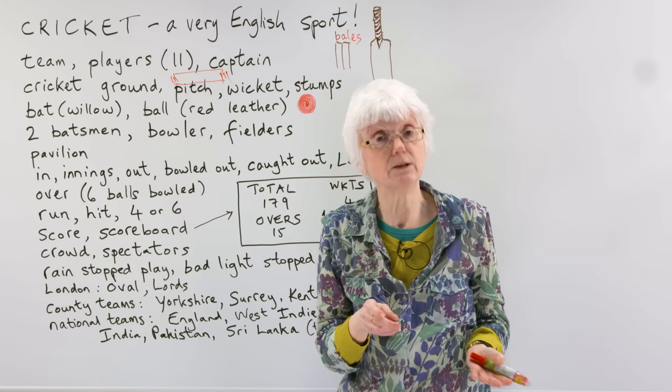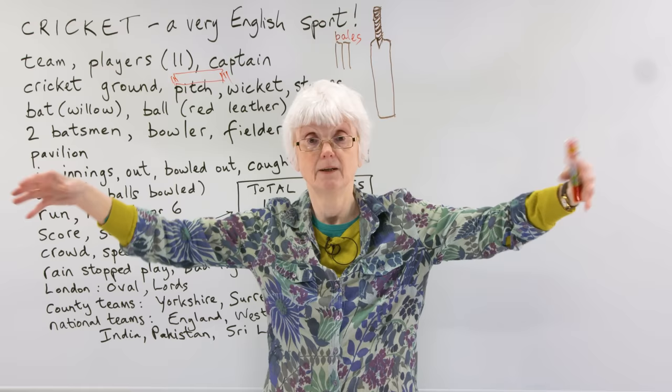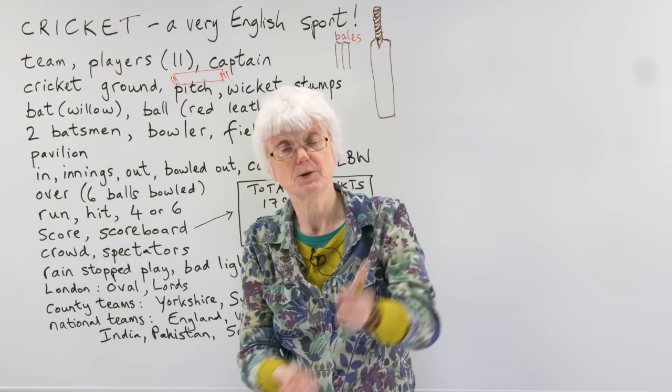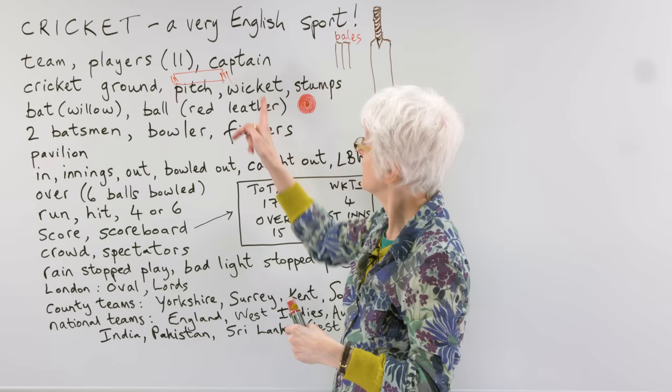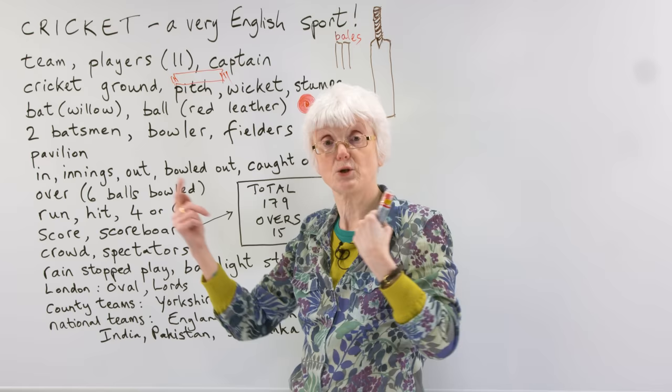You also have fielders - people from the same team as the bowler who are standing around the field. Some are close to the pitch, some are further away, but they're all waiting to see what happens when the batsman hits the ball, because they have to run after it and get it back as quickly as possible. If they don't get the ball back, the two batsmen can run backwards and forwards on the pitch, scoring points called runs.